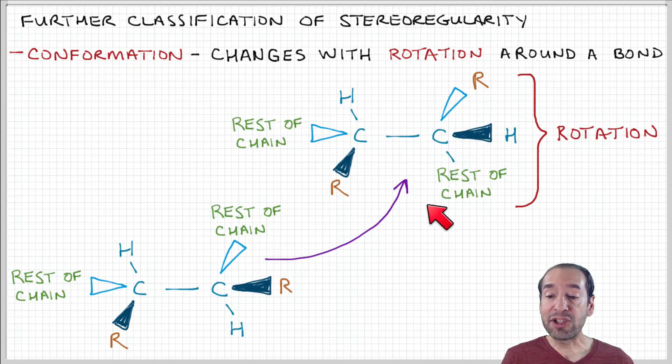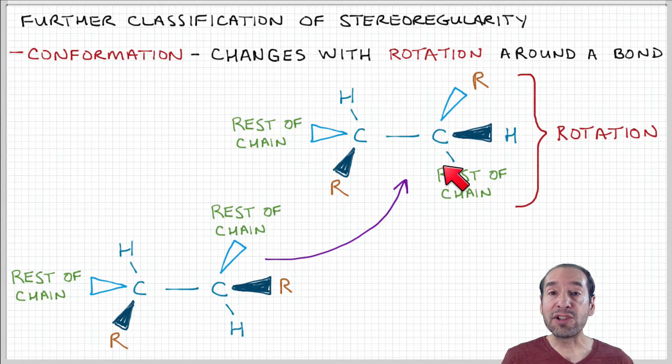on the right-hand side, I've made a change. Notice that now this side group that was coming out of the page here is now positioned going into the page. The rest of the chain was going into the page. And now that's sort of in the plane here. And then this hydrogen now is going into the page. So what I've done is I've changed the position of these components through a rotation.